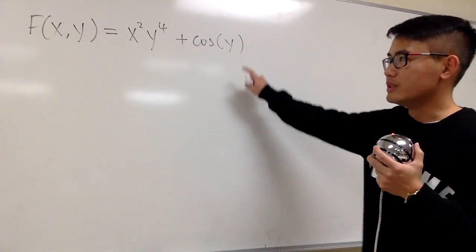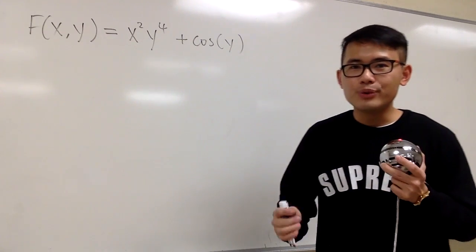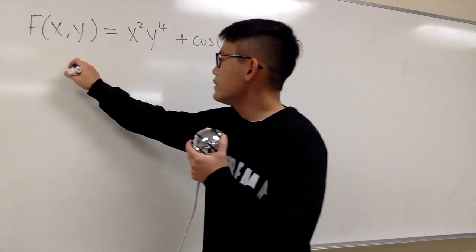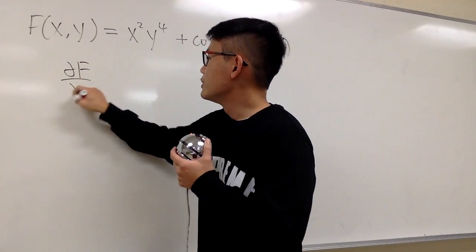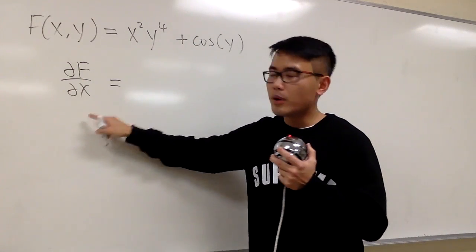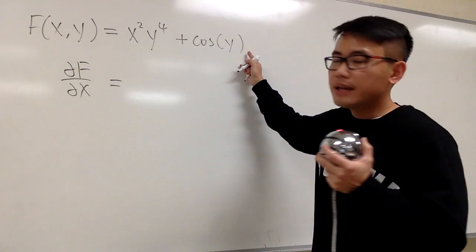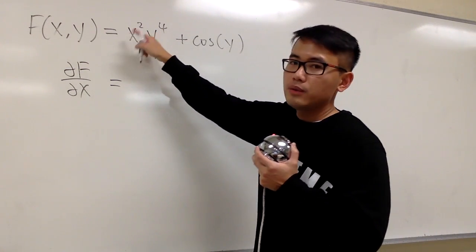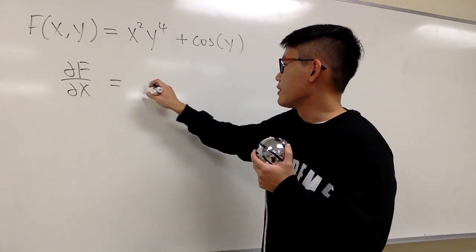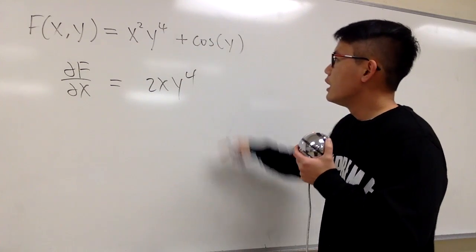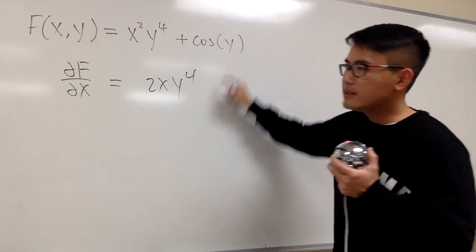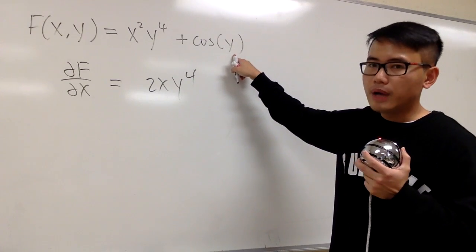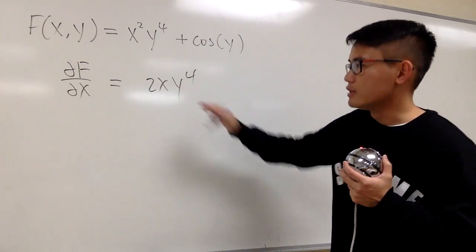Let's make some observations first with this function. At the end, I will tell you what the check is. Let's talk about the partial derivative with respect to x first. So x is the variable and y is just a constant. For this term, we differentiate x squared, bring the 2 to the front, so we have 2x. This other term is a constant, so it stays as 2x times y to the fourth power. And this last term is technically a constant in the x world, so when we differentiate it with respect to x, it becomes zero.